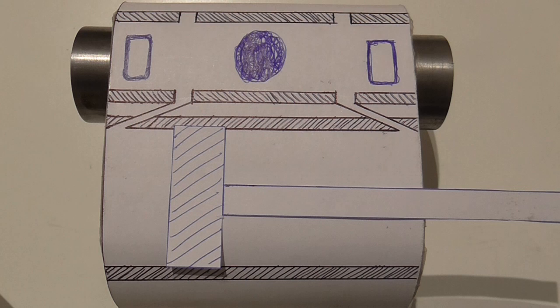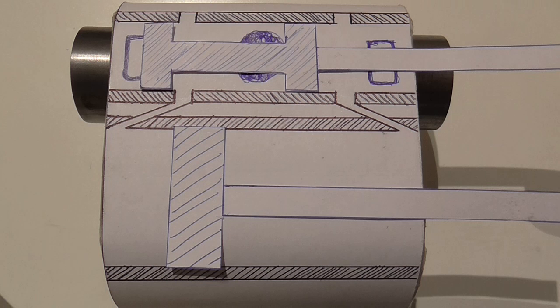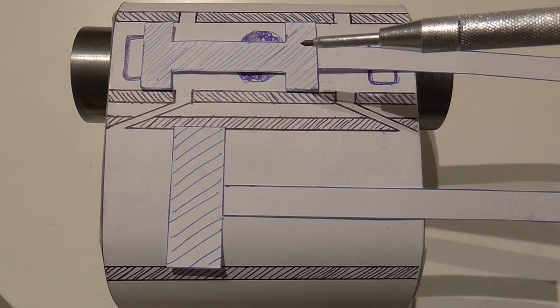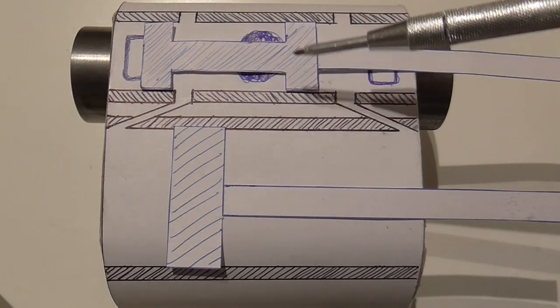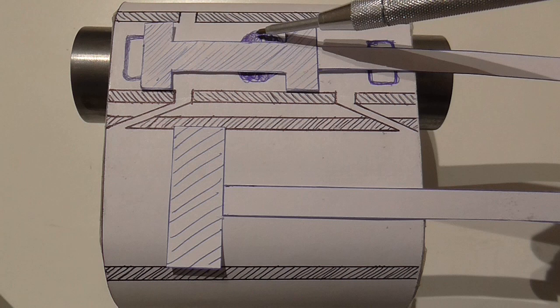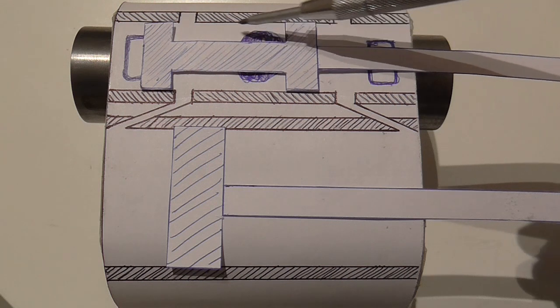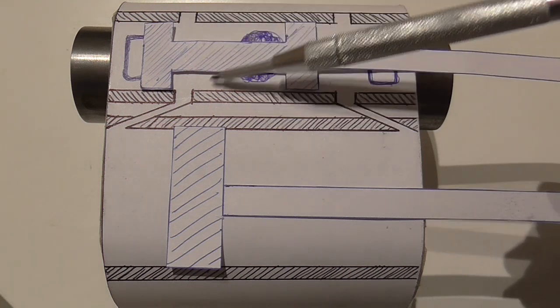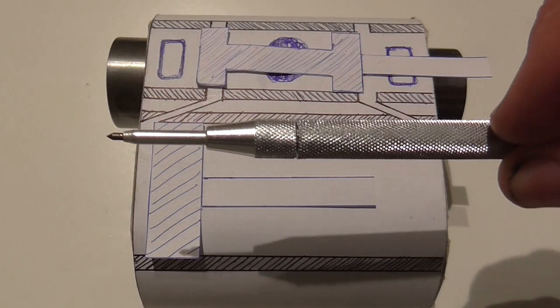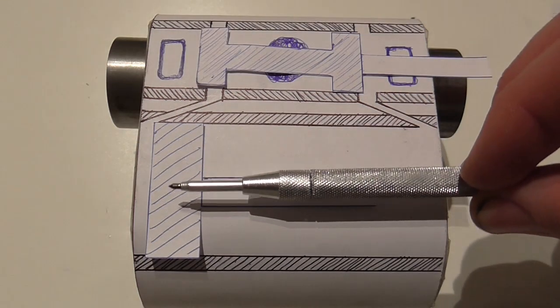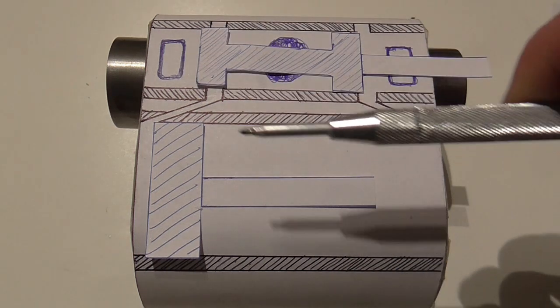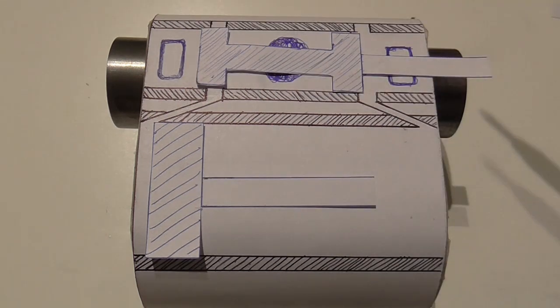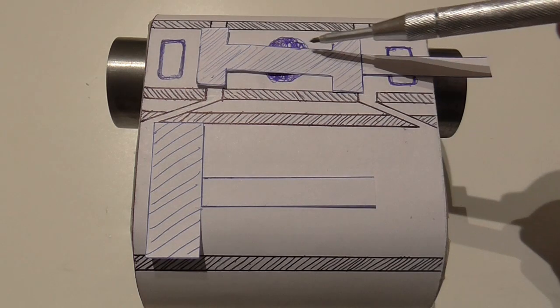But we need some way of controlling the order in which all those things happen. In the case of this cylinder we have another piston, and this is drawn in cross section, so basically it's a solid piston with a recess all the way around the middle. So here for instance, steam can come into the steam inlet and fill this cavity all the way around the piston.